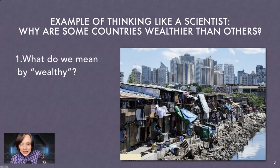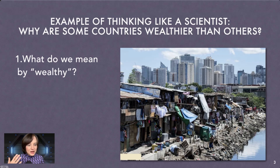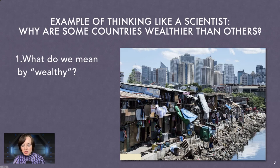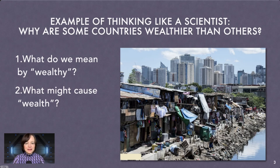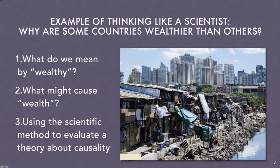First, in order to do anything, we need to ask: what do we mean when we say a country is wealthy? I'm going to focus on the national level — it could be city level or community level. This question also implies what causes wealth. So what is it that makes one place wealthy? We're going to talk about how we might use the scientific method to evaluate a theory about causality.